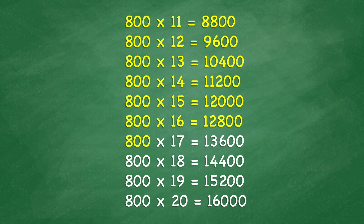800 times 17 equals 13,600. 800 times 18 equals 14,400. 800 times 19 equals 15,200.